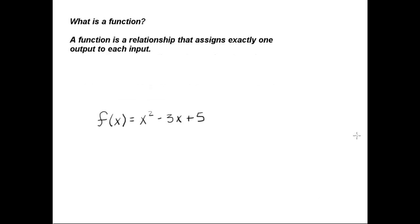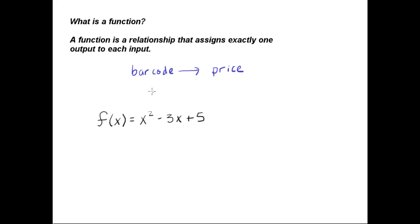Let's talk about the definition of a function. A function is a relationship that assigns exactly one output to each input. For example, if we have a barcode on an item that we're purchasing, we scan that barcode and then we come up with the price of the actual item. This is an example of a function.